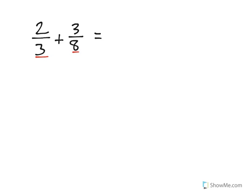So we need to find two equivalent fractions for, first of all, for 2 thirds, we'll need to find an equivalent fraction, and then for 3 eighths, where both their denominators are the same.